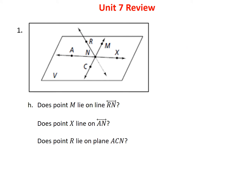Problem 1H asks a couple of questions. Does point M lie on line RN? There's point M, and RN is the line going through the plane — they do not touch, so the answer is no. Does point X lie on line AN? Line AN goes right through X, so the answer is yes. Does point R lie on plane ACN? Plane ACN lies flat in plane V, but point R is above it, so R does not lie in that plane.